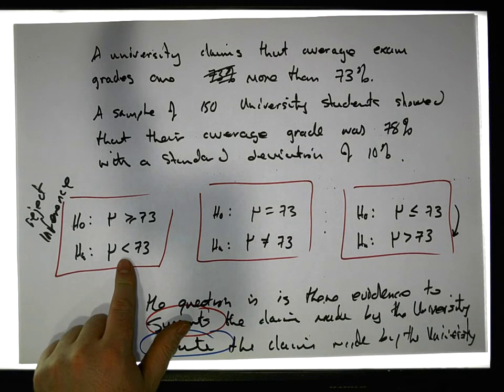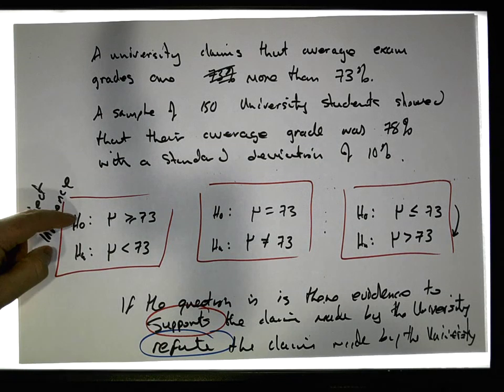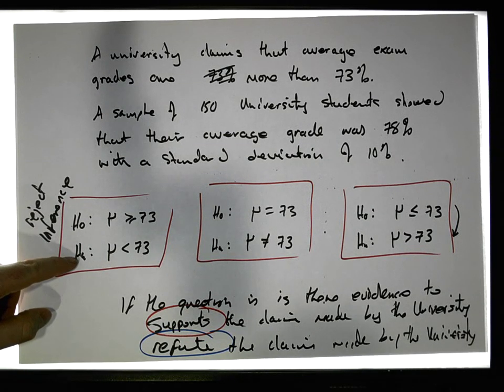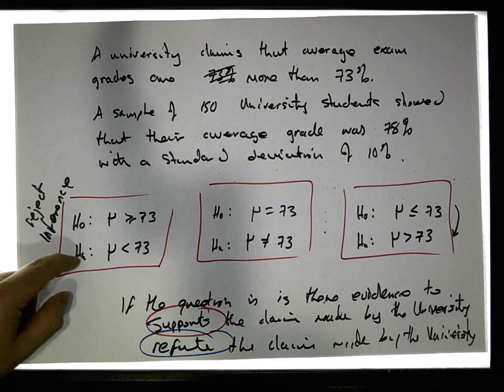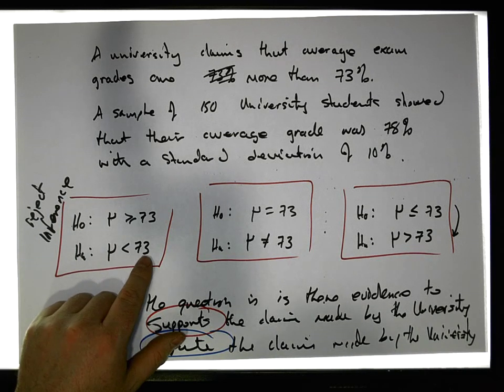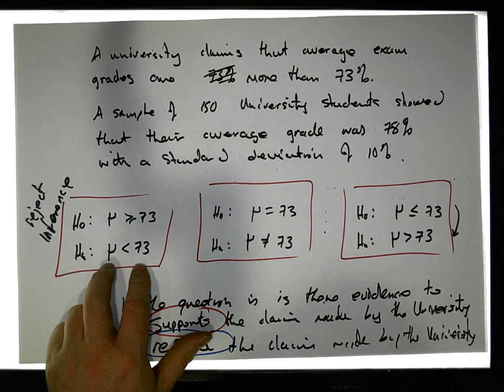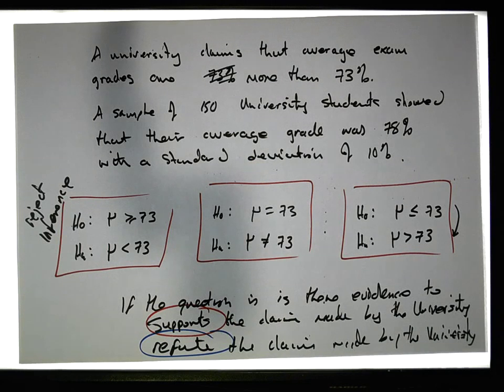So in this situation here, this here would be that if we can move away from the null to the alternative, well, then this suggests that the average is less than 73%, which is something that refutes the claim being made by the university.